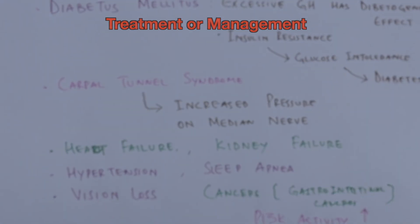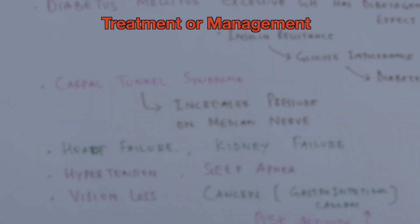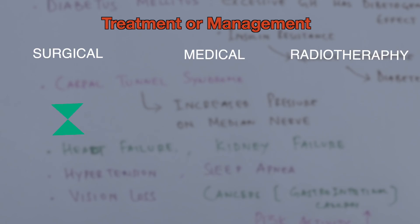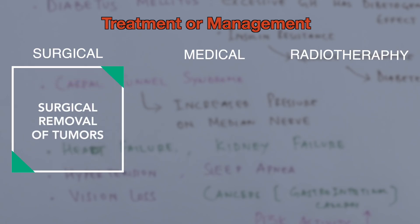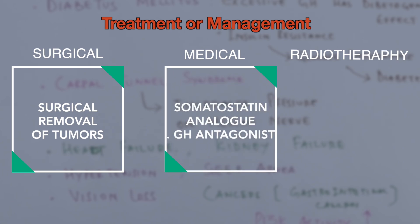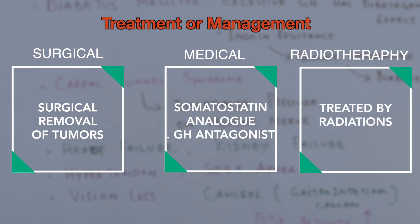Treatment or management of acromegaly involves three approaches: surgical, medical, and radiotherapy. Surgical treatment involves removal of the pituitary tumor. Medical treatment includes somatostatin analogues and growth hormone antagonists. Radiotherapy treats acromegaly using radiation.